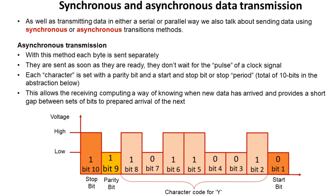With asynchronous transmission, each byte is sent separately and is sent as soon as it is ready. We don't wait for a synchronisation pulse from a clock signal. In this abstraction here, we can see an ASCII character Y is being transmitted, and we transmit it along with a parity bit — covered in a separate video — but very importantly we also have to send it with what's called a start and a stop bit. In this abstraction we're sending 10 bits of data to transmit the character Y. This start and stop bit allows the receiving computer a way of knowing when new data has arrived, and also provides a short gap between bits of data to prepare for the arrival of the next one.